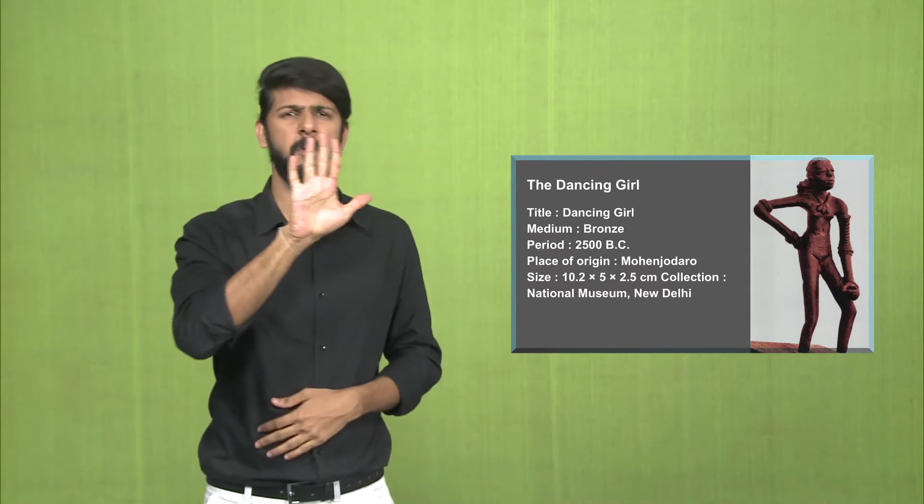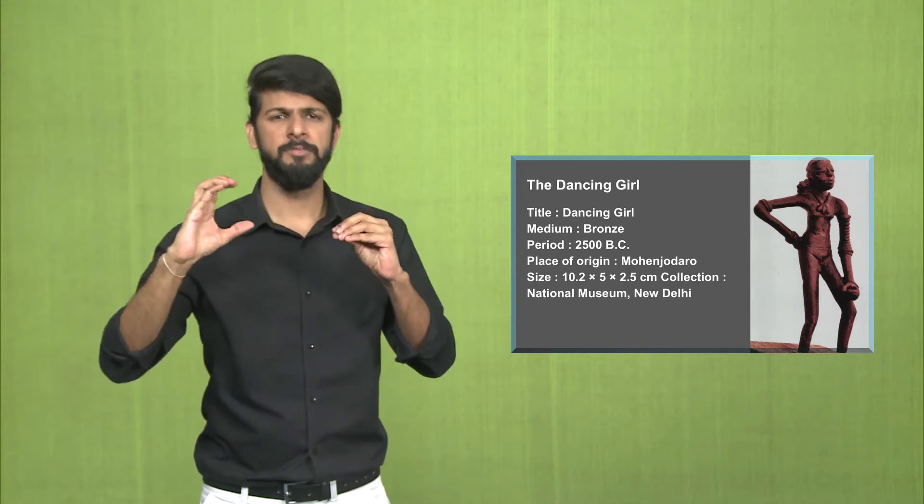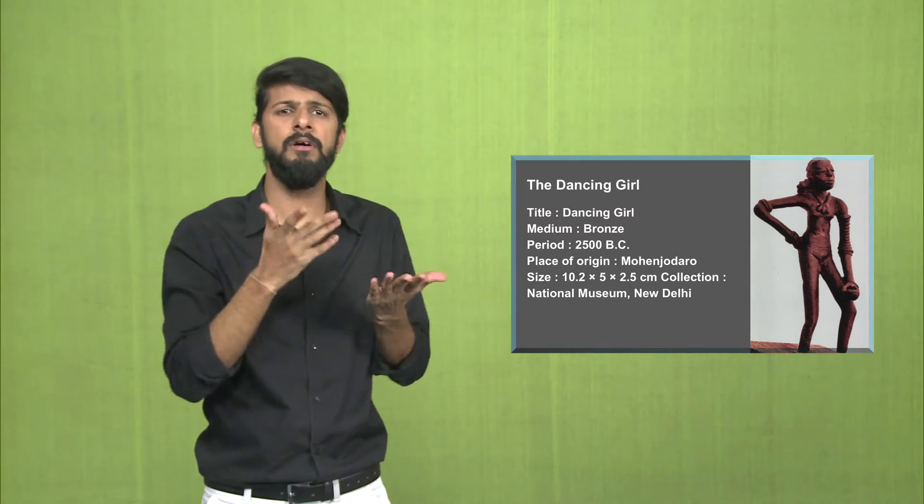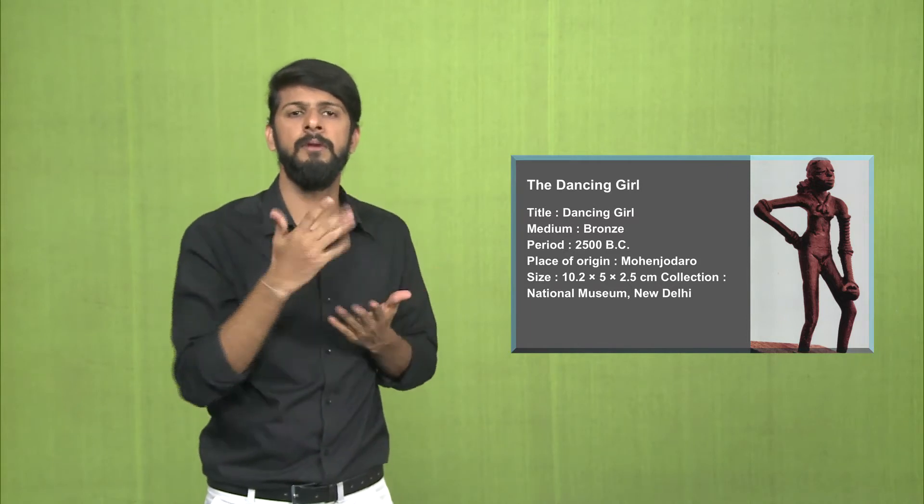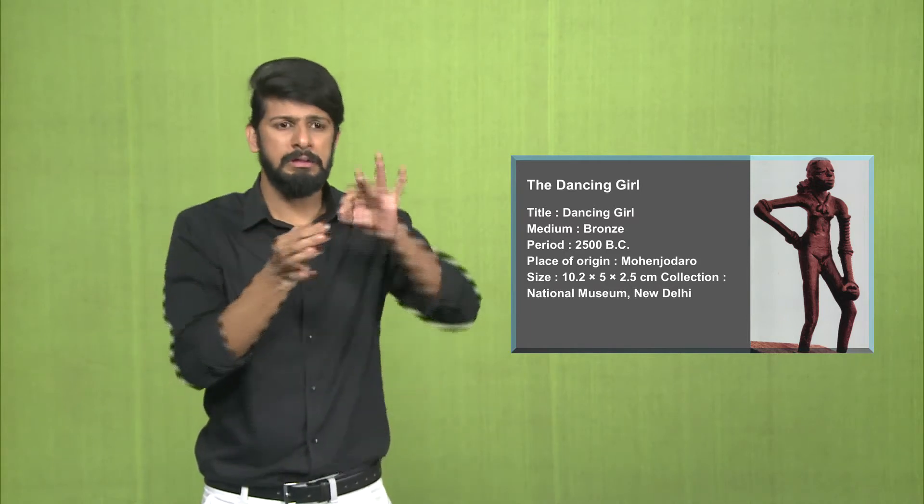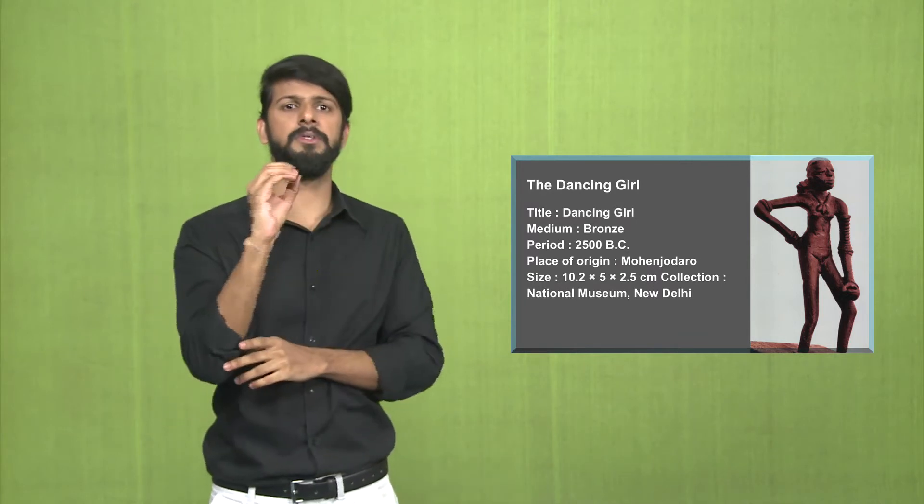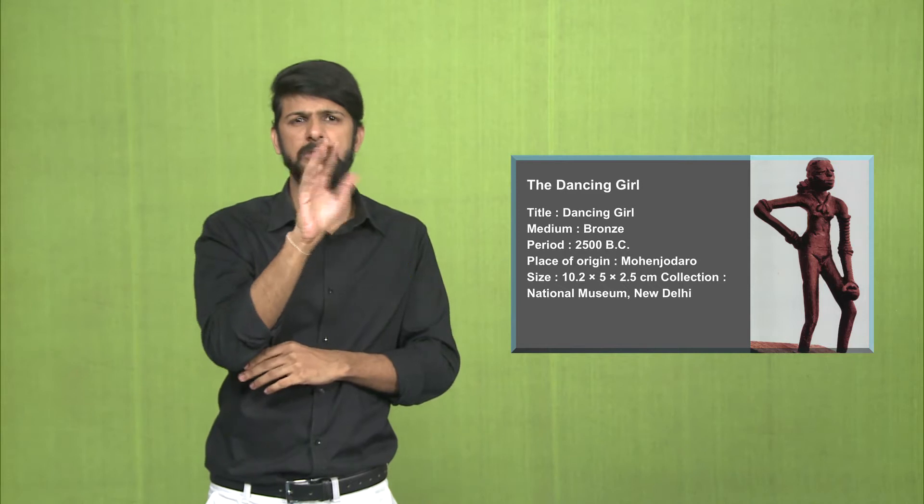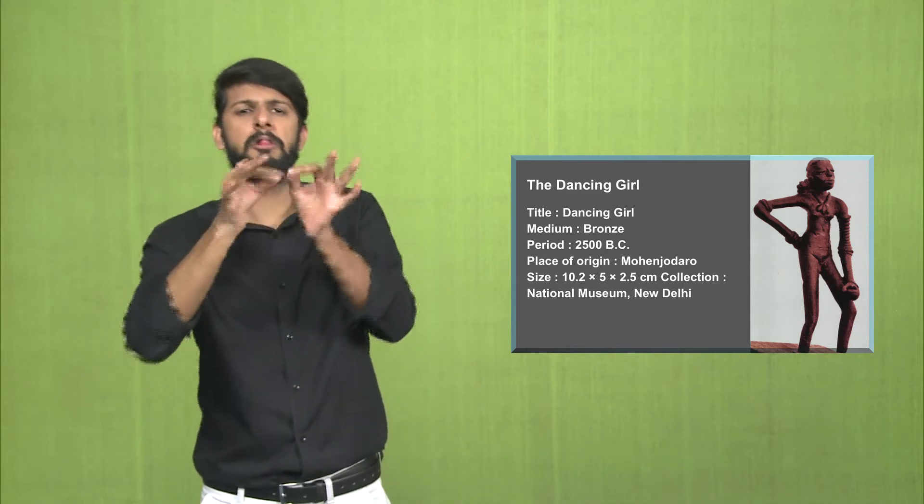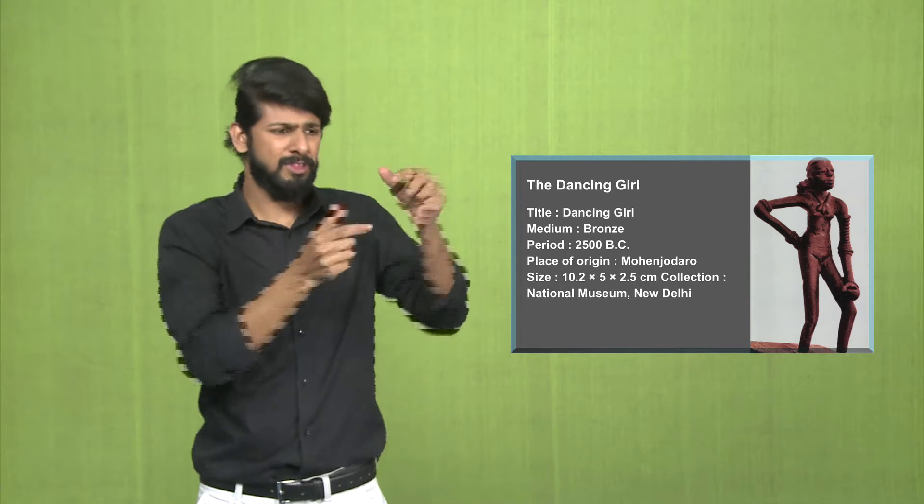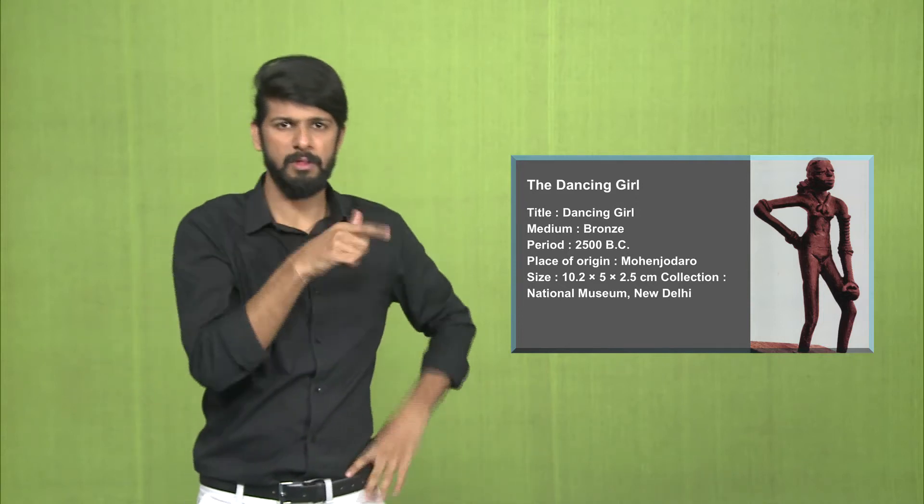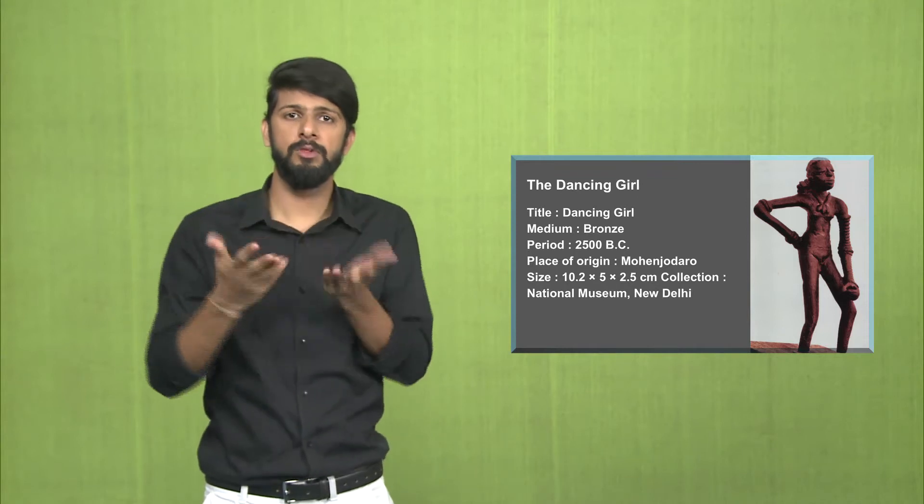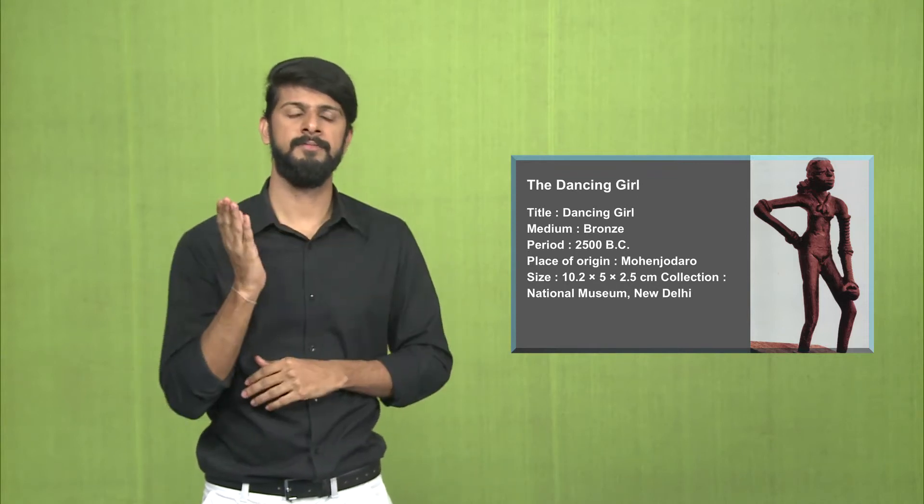The period is 2500 BC. This sculpture was found at Mohenjo-daro. The size is 10.2 cm x 5 cm x 2.5 cm and this sculpture is now displayed at the National Museum in New Delhi.